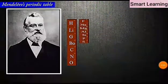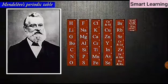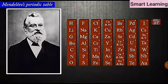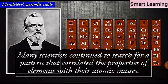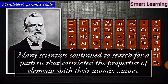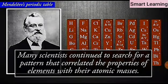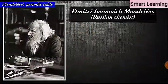Even after the rejection of Newlands' law of octaves, many scientists continued to search for a pattern that correlated the properties of elements with their atomic masses. The main credit for classifying elements goes to Dmitry Ivanovich Mendeleev, a Russian chemist.